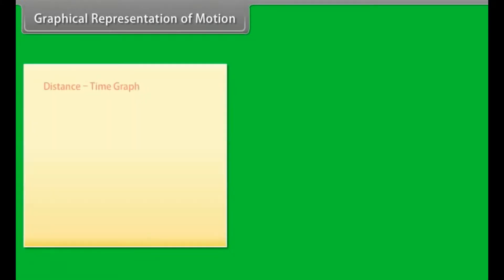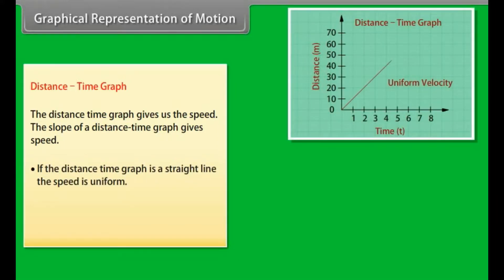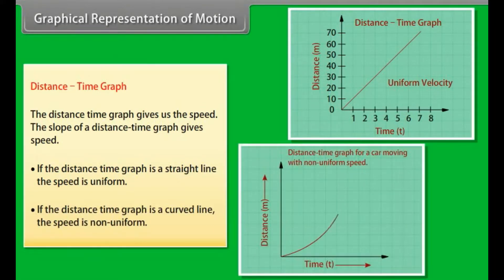Graphical representation of motion. Distance time graph: The distance time graph gives us the speed. The slope of a distance time graph gives speed. If the distance time graph is a straight line, the speed is uniform. If the distance time graph is a curved line, the speed is non-uniform.